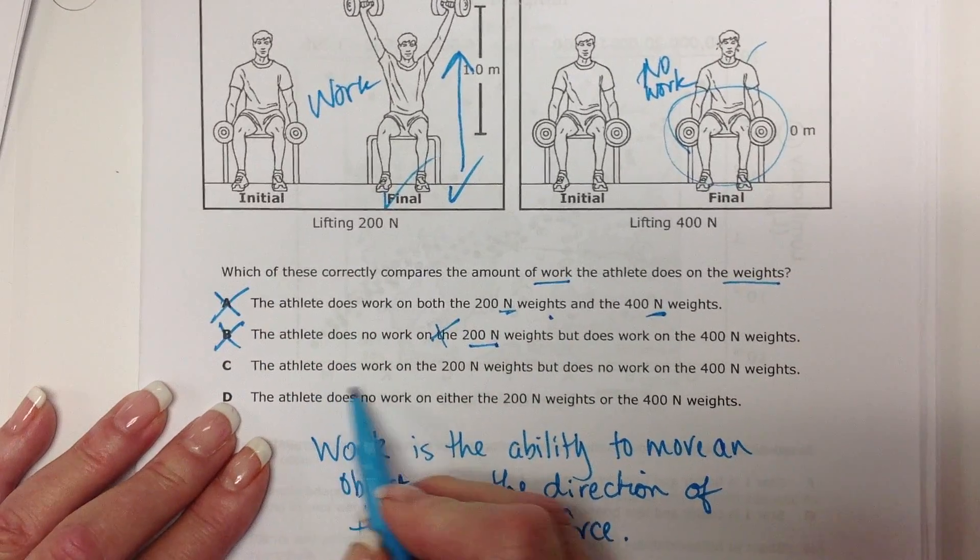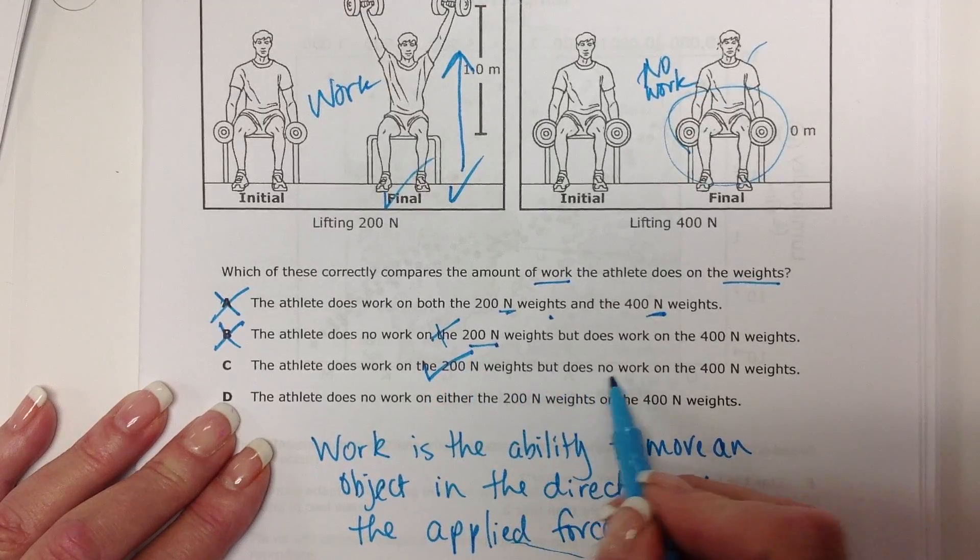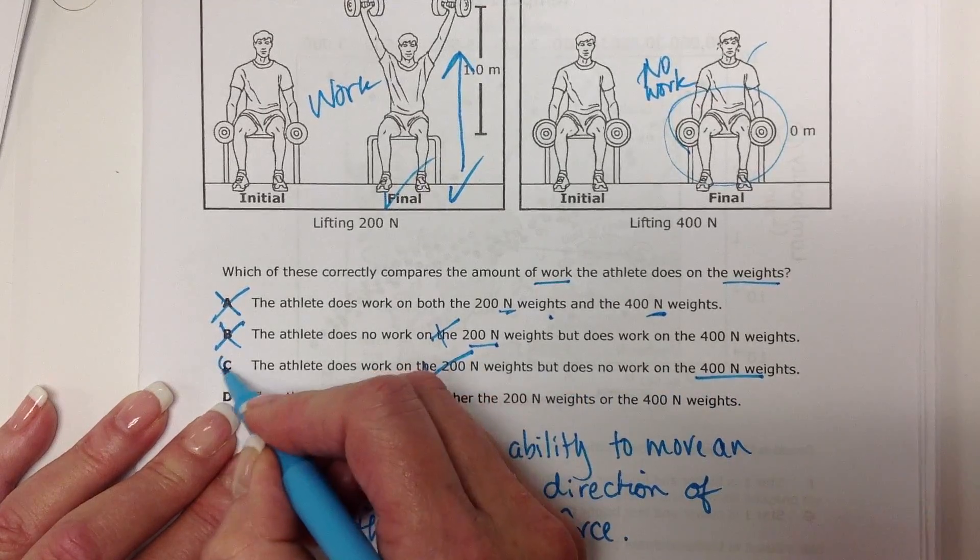Here it says the athlete does work on the 200 Newton weight. That's correct. But not on the 400 Newton weight. That looks good.